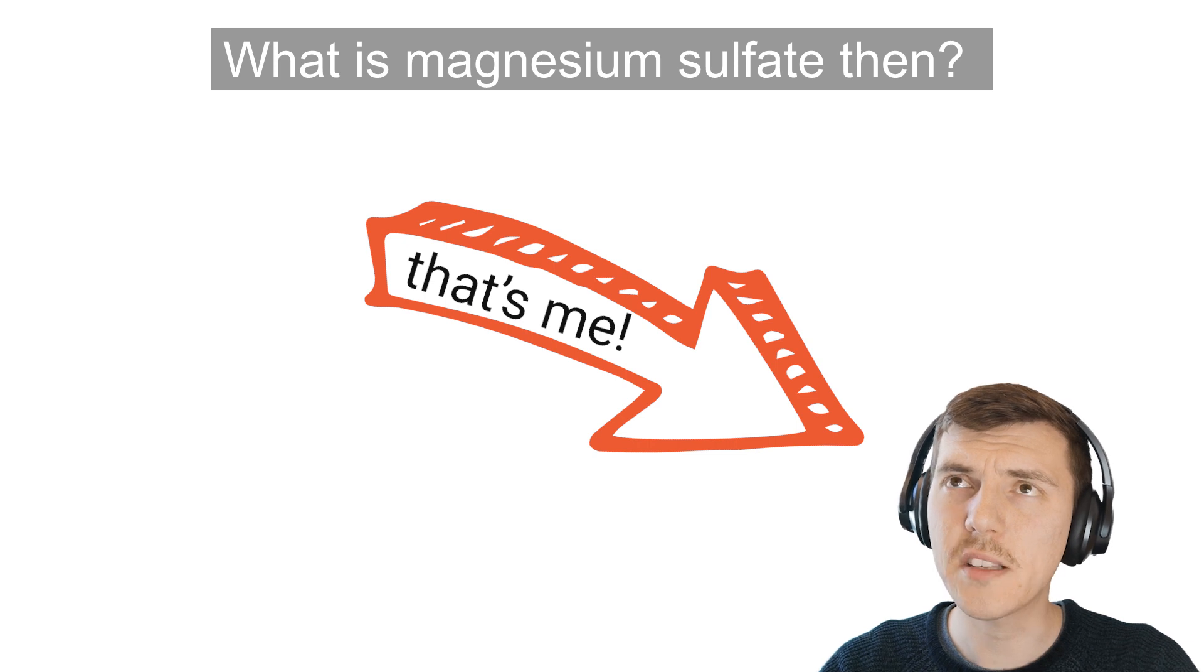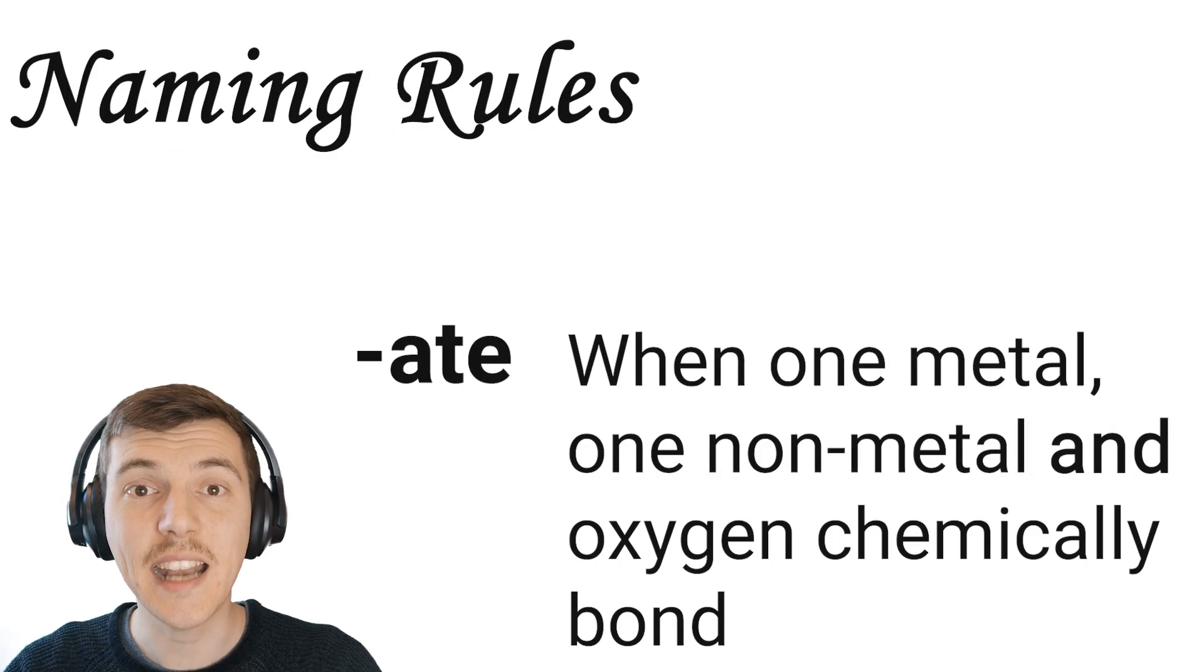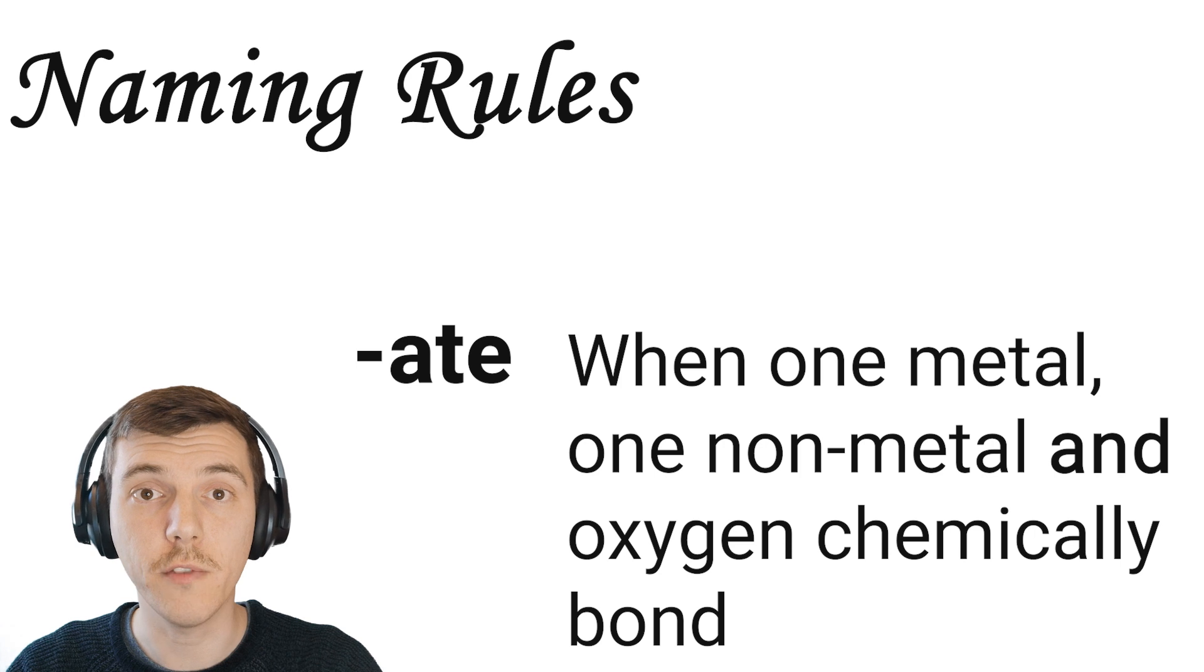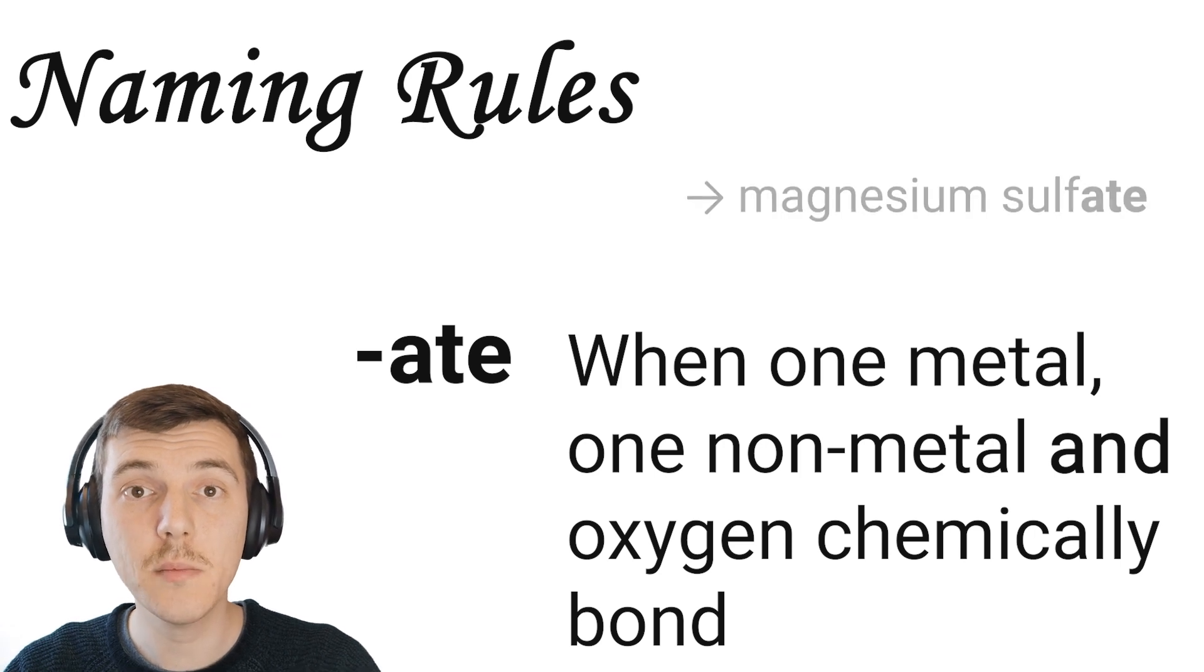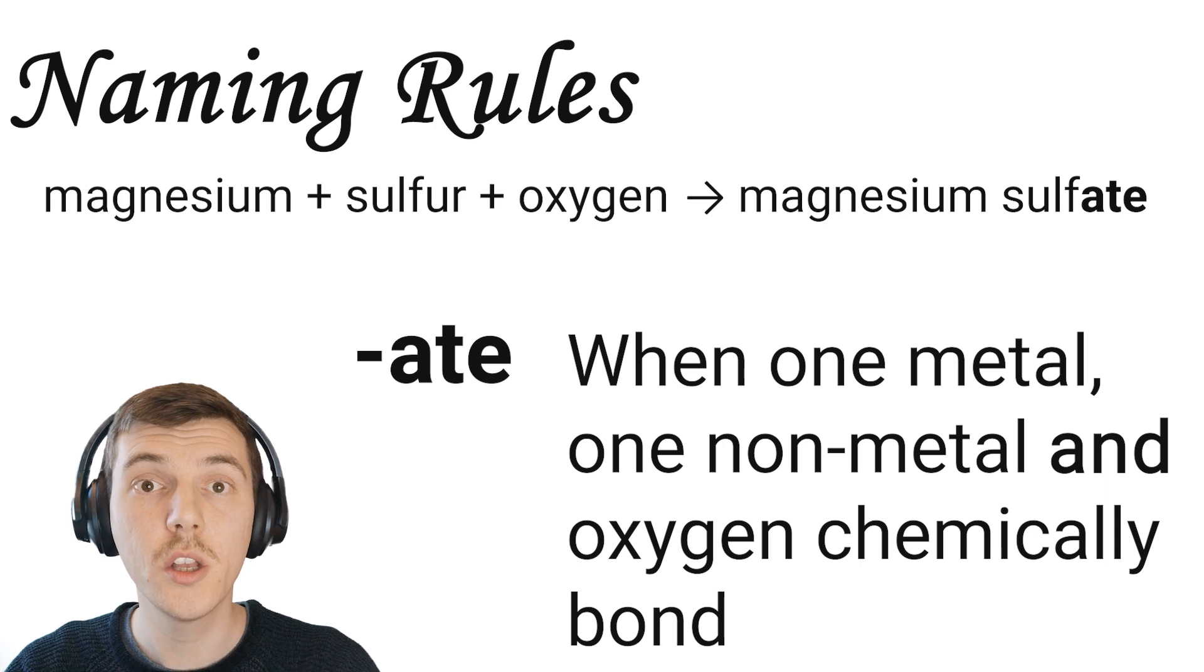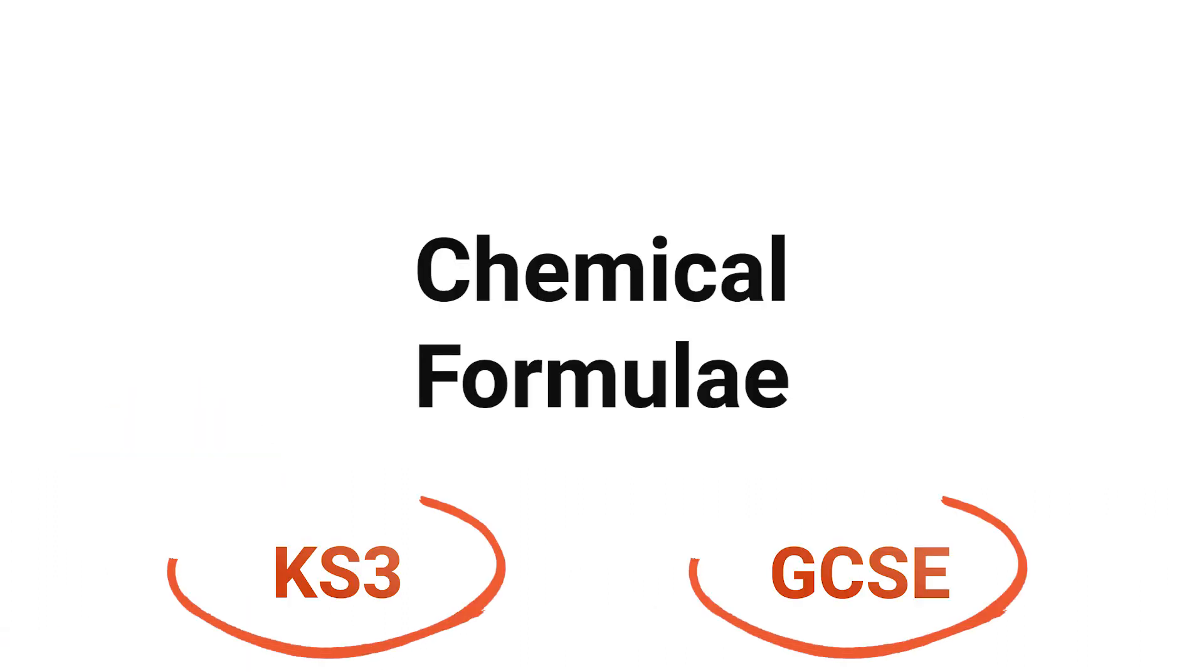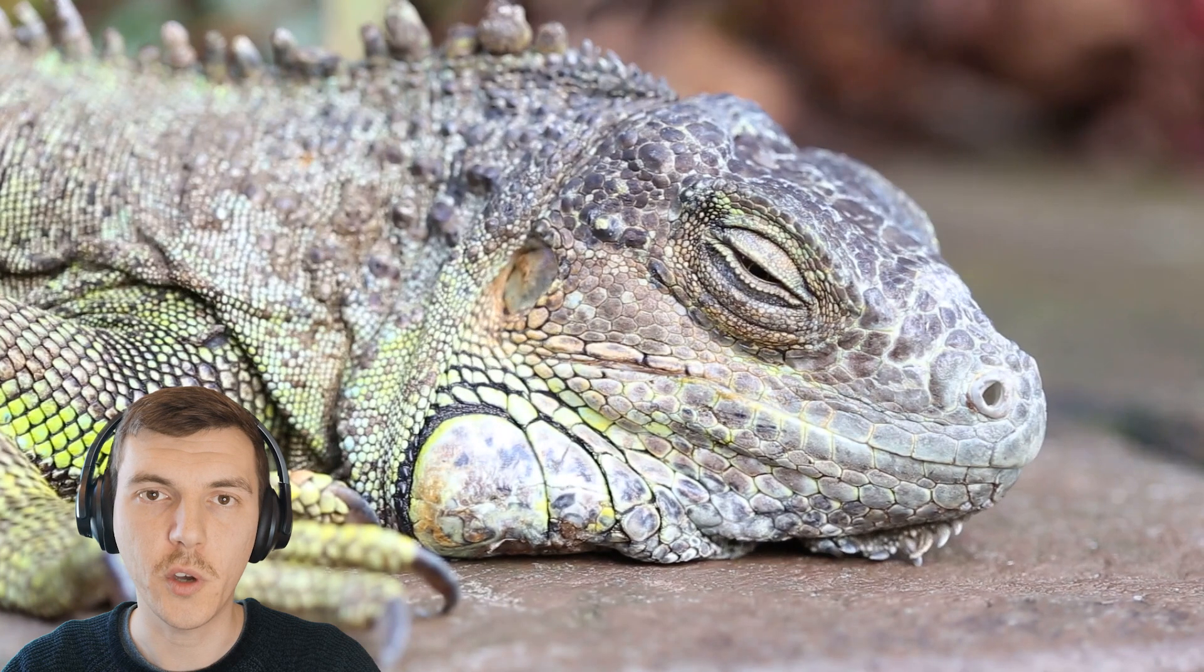But Mr. Gundry, I've heard about something called magnesium sulfate. How is that different to magnesium sulfide? Well, anything that ends in '-ate' means that there is a non-metal and oxygen involved. So when magnesium sulfate is formed, it's formed of magnesium metal, sulfur, which is a non-metal, and oxygen.